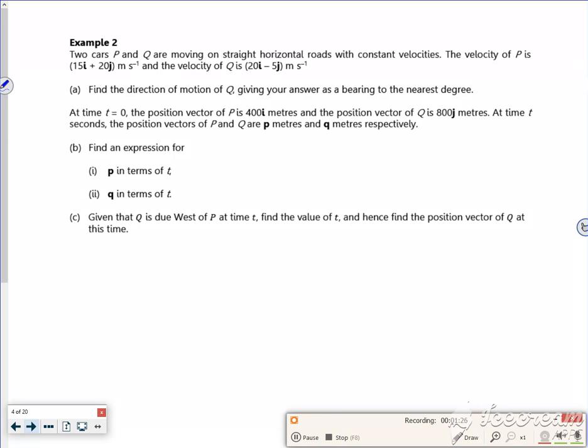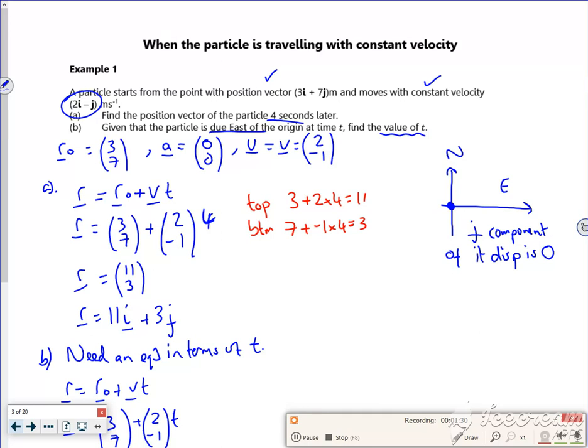Right, hang on a sec. It's probably worth, I didn't really mention it properly, but this is a constant velocity question. So my acceleration is zero, and if you remember the equation I don't write, which is X equals UT, that's just been adapted to R equals R0 plus VT, same thing, because U and V are the same.